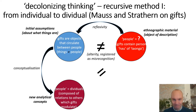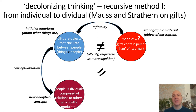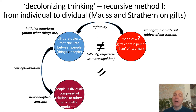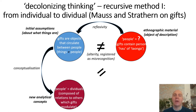Where those assumptions come from is a separate, related, interesting question, but in principle those assumptions can come from anywhere. Whenever you set out to engage with someone or something, you start from a particular set of initial assumptions — what kinds of things exist, what concepts you might use to describe the world around you. Those are the initial conditions. The second bubble on the right, the bright red one, is the ethnographic material, the object of description that the anthropologist seeks to engage with and make sense of.